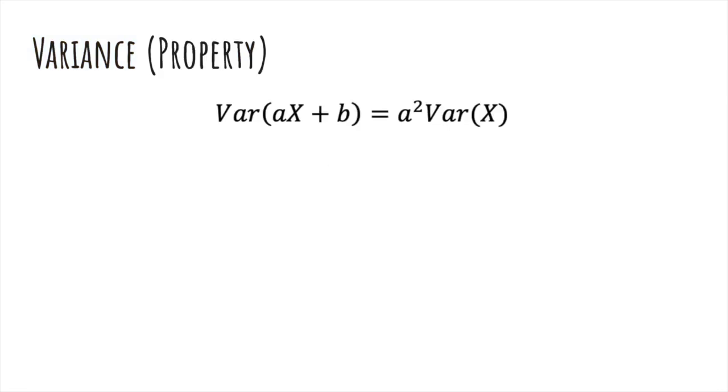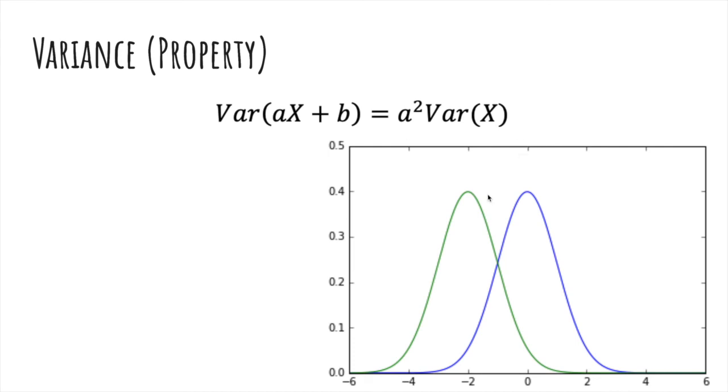So now we're going to prove this fact, kind of. So here's two distributions. One is just shifted over. Which has higher variance? Well, they actually have the same variance. The variance of x plus b is the same as variance of x because this one isn't more random or less random than this one.